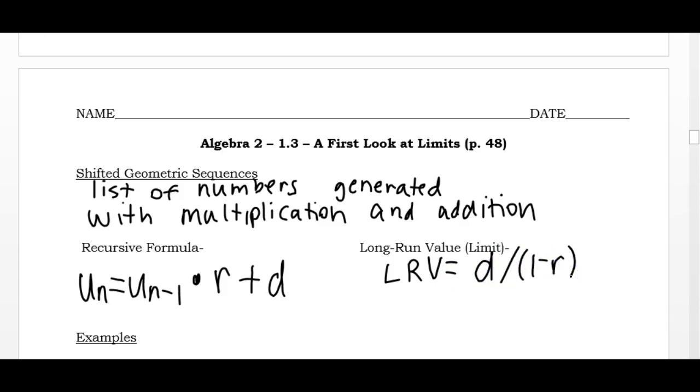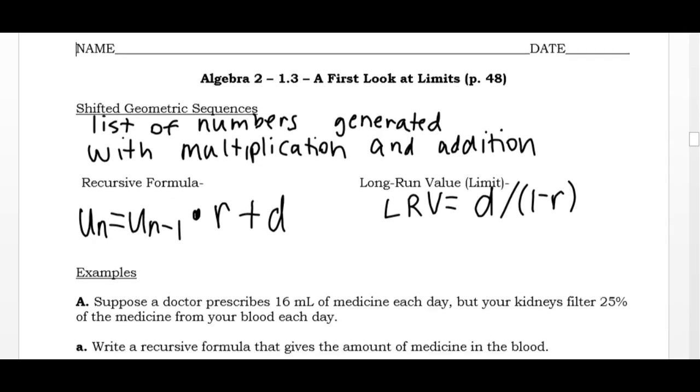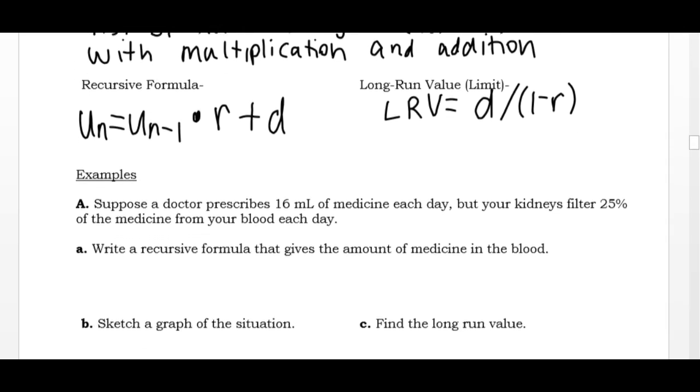A couple things to note is, if your sequence levels out, we'll just leave it at that. So that's our formula for the long-run value. Let's do some examples and we'll see both of these in action.